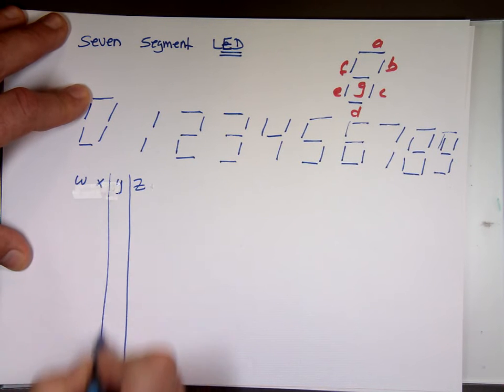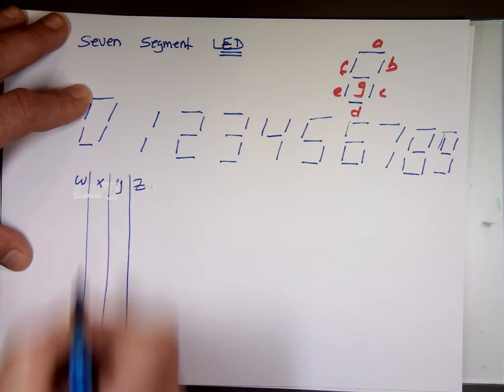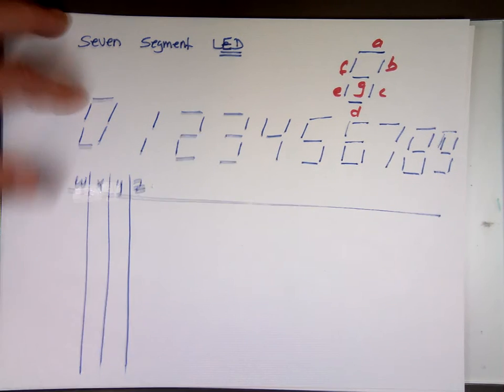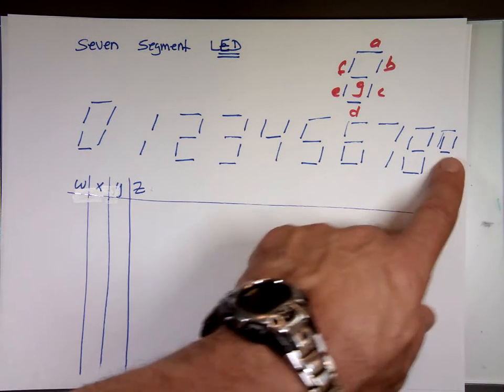And that's going to make all the numbers? Well, they should be plus more. That's four inputs. How many? Two to the fourth? Sixteen. You only got ten here, right?